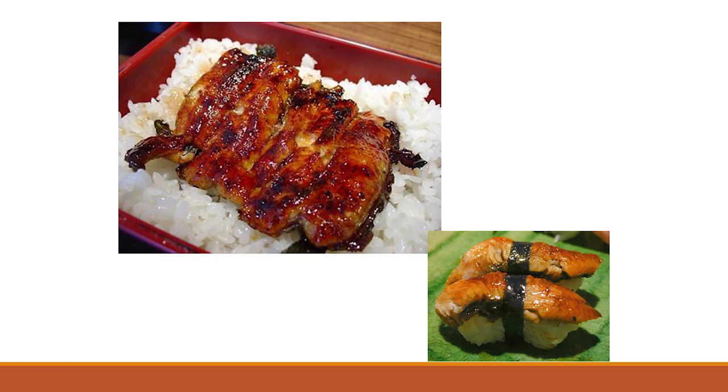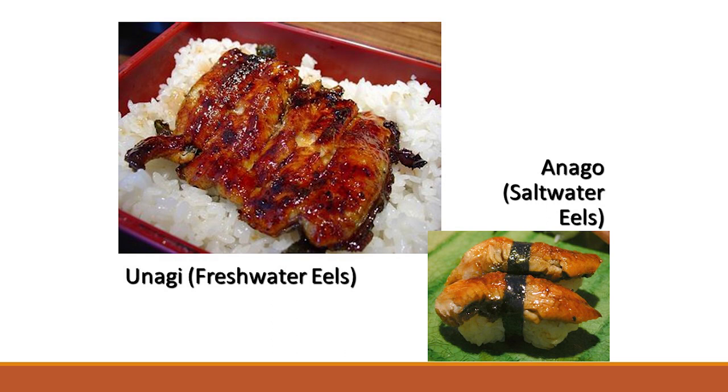Have a look at these two common Japanese dishes. The picture on the left is Unagi. But as many of you know, the picture on the right is known as Anago — it's also a Japanese eel, but it's a saltwater eel. Many of us are wondering, eels are eels, what's the difference? For the Japanese, there is a very distinctive difference between these two different types of eels.